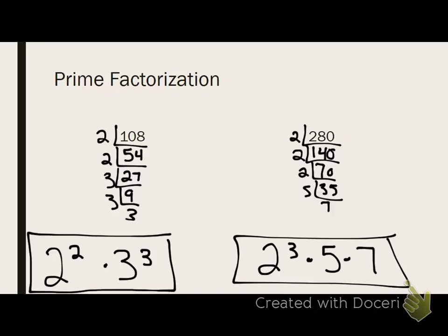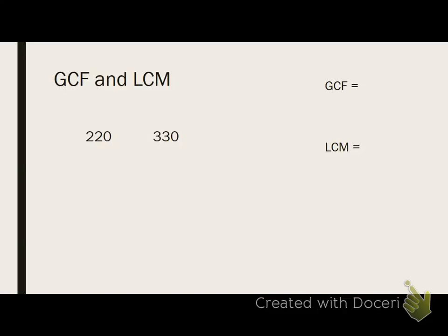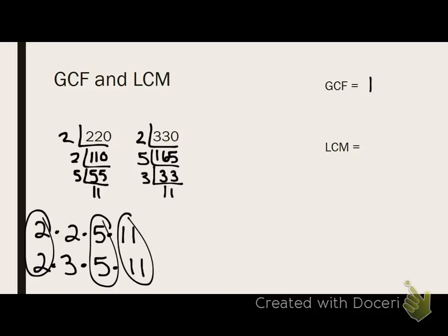I want to find the GCF and the LCM of these two numbers. Use prime factorization, please. Prime factorization of both numbers. Now for GCF, I group the common factors. My GCF is 110. What's my rule for LCM? What's my last step? Very good. Multiply in the leftover numbers to get 660. Who got them both? Awesome. Good job.